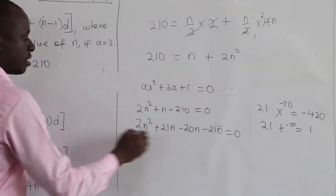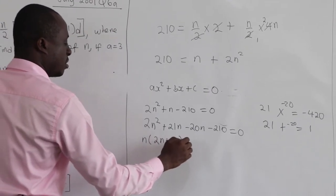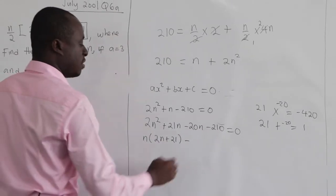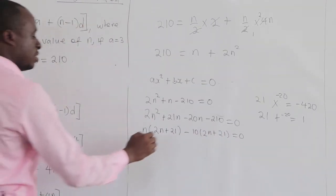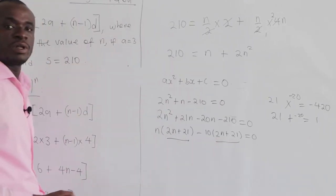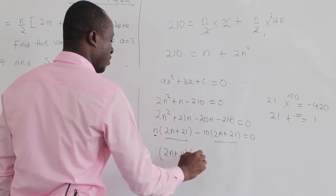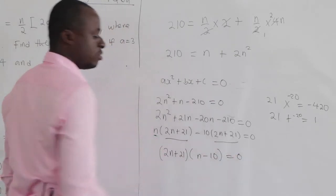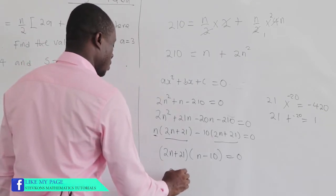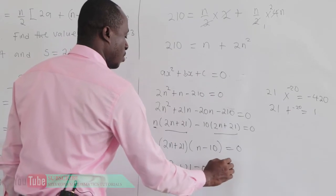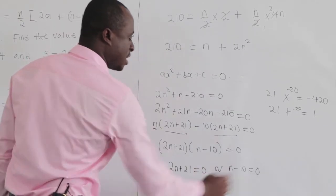Looking at the first two terms, n is common, so we factorize n out to get n times 2n plus 21. From the last two terms, negative 10 is common, giving negative 10 times 2n plus 21. So 2n plus 21 is a common factor, and we factorize it out to get 2n plus 21 times n minus 10 equals 0.